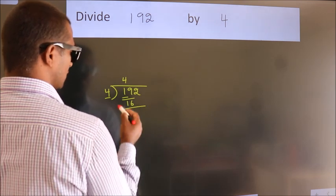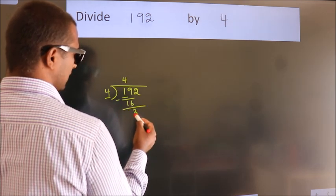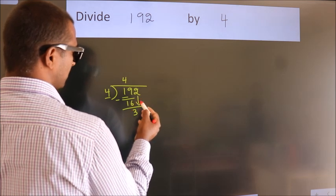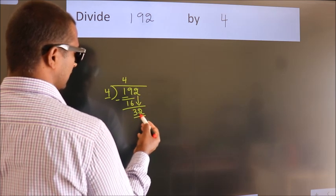Now we should subtract. We get 3. After this, bring down the beside number. So 2 down. So 32.